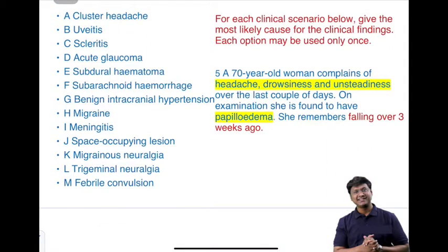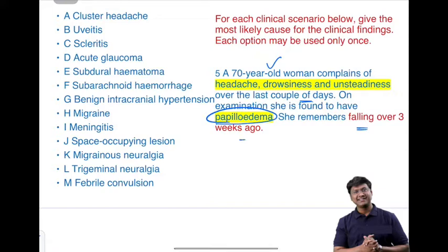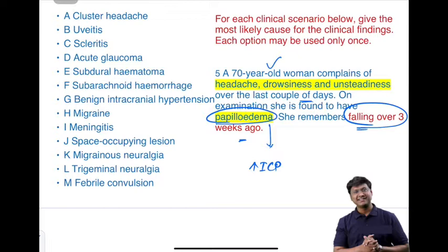The fifth clinical scenario is a 70-year-old woman complaining of headache, drowsiness, and unsteadiness over the last couple of days. Examination reveals papilledema. She remembers falling three weeks ago. Papilledema indicates raised intracranial pressure. Given the history of a fall three weeks prior, she would have developed a subdural hematoma.